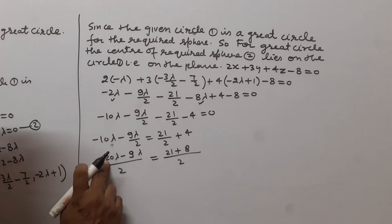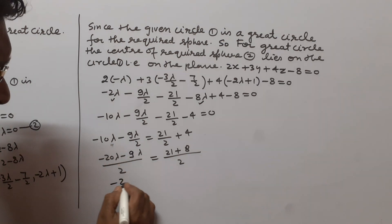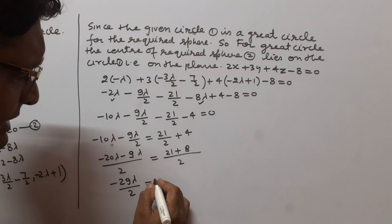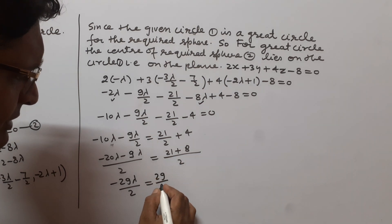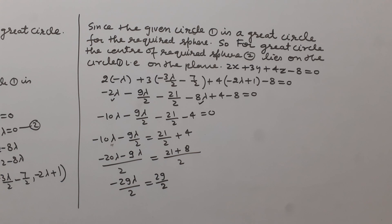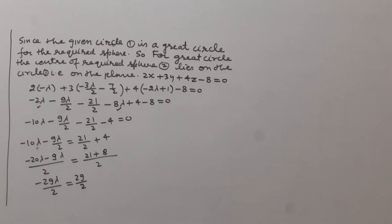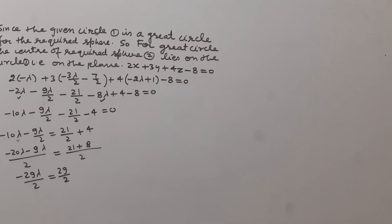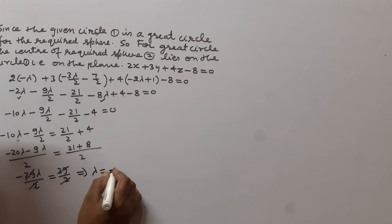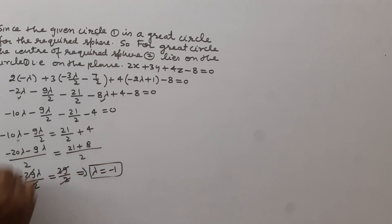So we have -29λ/2 + 29/2 = 0. The 29/2 terms cancel, giving -29λ = -29, so λ = -1.